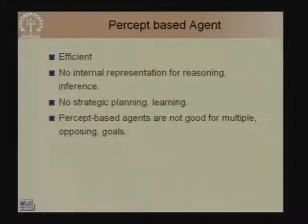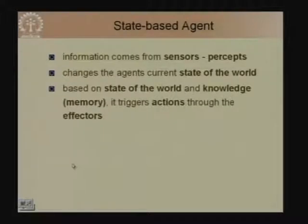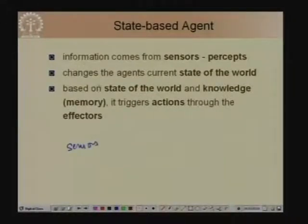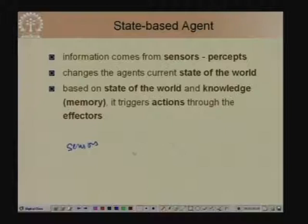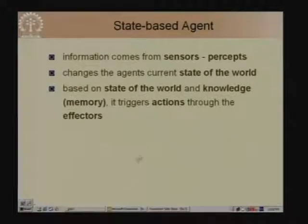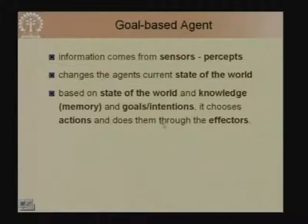Percept-based reactive agents are efficient because they do not require internal representation for reasoning or inference. However, there is no strategic planning or learning and they are not good for multiple opposing goals. In state based agents, information comes from sensors and changes the agent's internal view of the world based on its state and knowledge; it triggers actions through effectors and the agent performs some deliberation to choose and carry out actions.